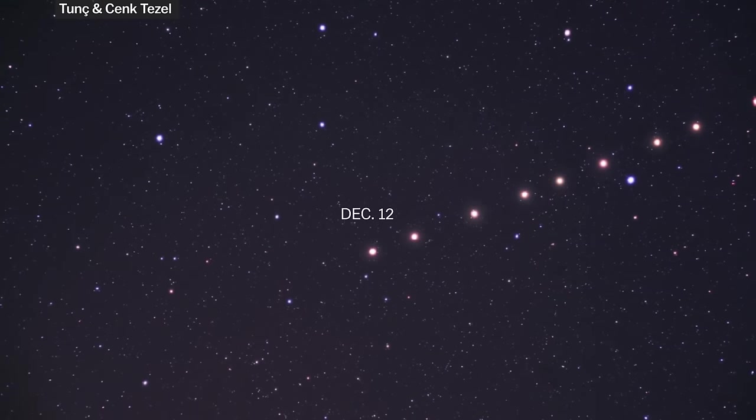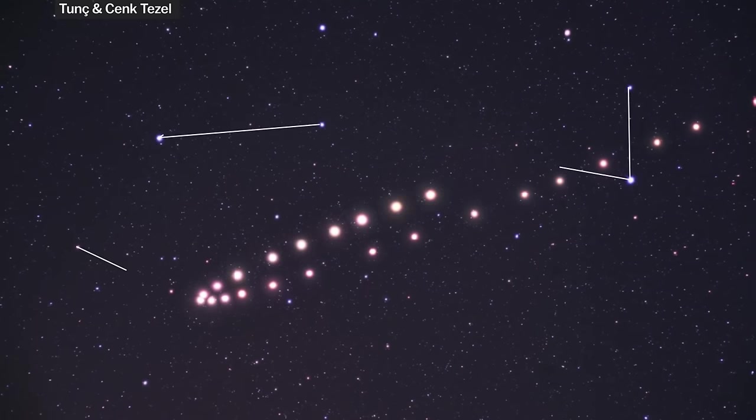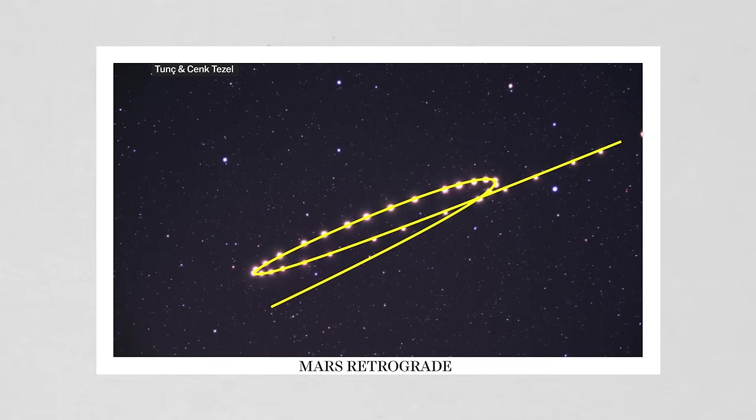In this image, Mars was photographed every five to seven days between October 2011 and July 2012. Once all the photos were combined by aligning the stars in the background, it appears as though Mars looped back on itself before continuing on its orbit.